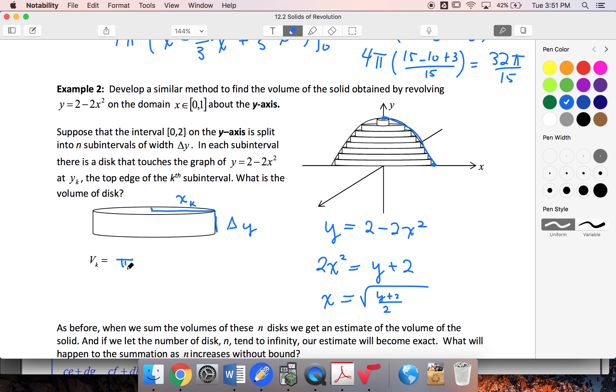So my volume is going to be pi r squared times the height. So then I'll get the pi y plus 2 over 2. Sorry, y sub k. And this was square root, and I square it. So no more square root. Delta y.